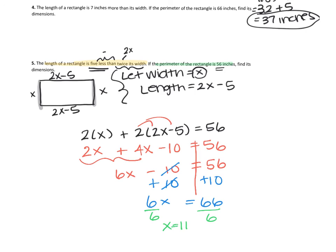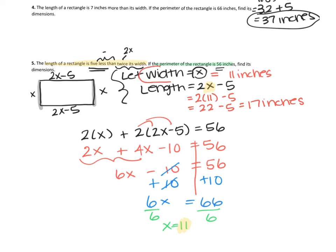But we do not stop there — we're going to answer our question. The width is just equal to X, so my width is 11 inches. To get my length, I substitute 11 in for X: two times 11 minus five. Two times 11 is 22, minus five makes 17 inches. So our answer is a width of 11 inches and a length of 17 inches. That concludes our lesson on the second day of solving equation word problems. If you have any questions, let us know.